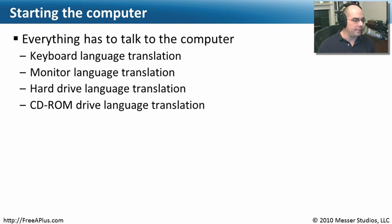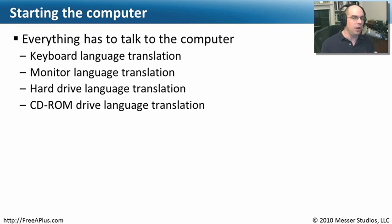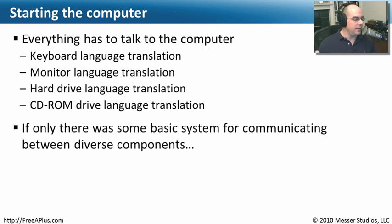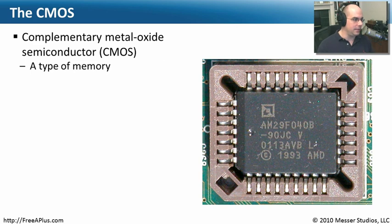We'll first talk about what happens when we start a computer. When we turn on a computer, it has to be able to do a lot of different things. It has to know when we push a key on a keyboard — what does that really mean? We're hitting the letter A, but how does our computer know that? When we plug in a monitor, how does it know what to show? That type of translation between the real world components and the hardware of the computer has to be done by something — and the way that we make that happen is with this thing called the CMOS.